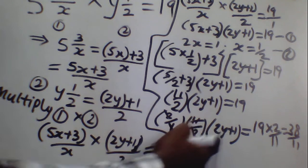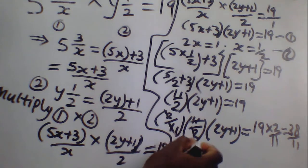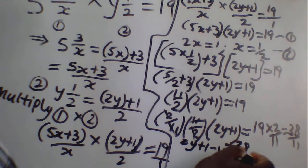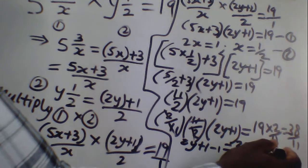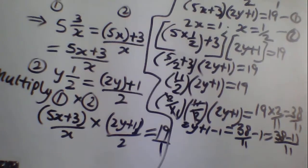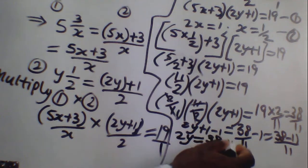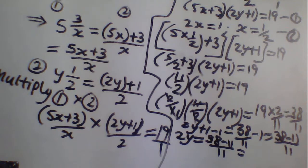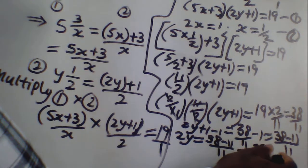From here we have 2y plus 1. On the right hand side we have 38 over 11. So subtract 1 from both sides: 2y plus 1 minus 1 is equal to 38 over 11 minus 1. From here, 38 minus 11 over 11 — so 2y is equal to 38 minus 11 divided by 11, which gives us 27 over 11.